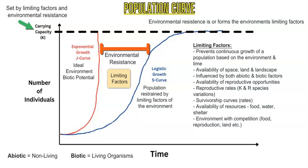Limiting factors include both abiotic and biotic factors. Abiotic factors — a quick ecology review — are non-living: rocks, water, soil, land, terrain, and climate. Biotic factors are living, organic factors: food sources, predation, survivorship, reproductive rates, and R versus K species. More specific limiting factors include space and land, competition from predators, reproductive ability, food sources, shelter, breeding habits, survivorship, and availability of water and energy.